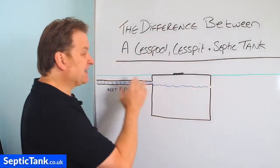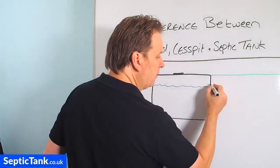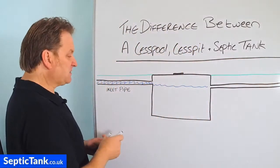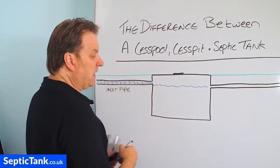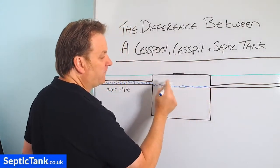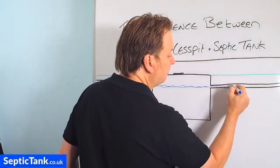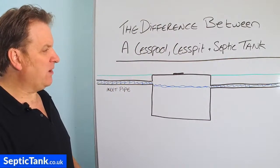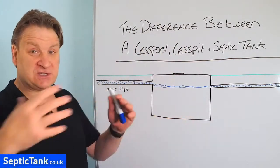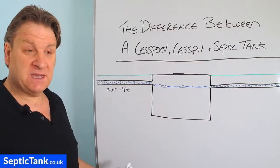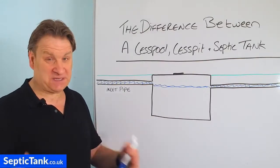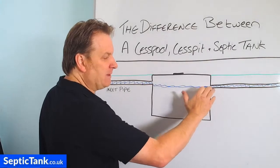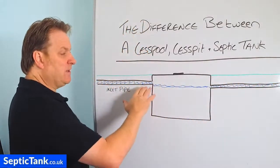A cesspit is exactly like a cesspool but the only difference is that it's got an outlet pipe. So all the wastewater will still come in, the wastewater will fill up to the level of the outlet pipe here and then it will drain away into a soakaway. In the soakaway it will then just soak away — it could be a pit, a herringbone system, or septic tank soakaway crates. The point is: liquid comes in, it fills up to the level of the outlet pipe and then the water will just drain away.